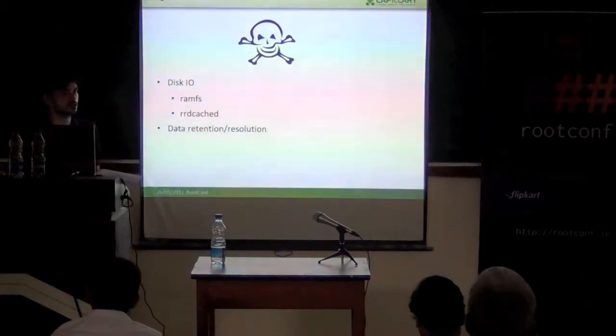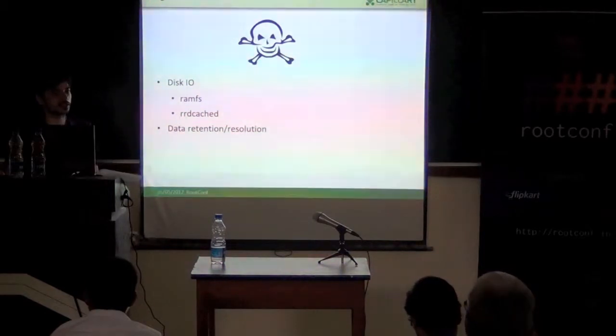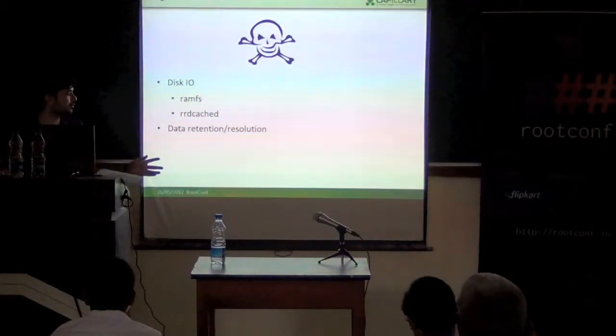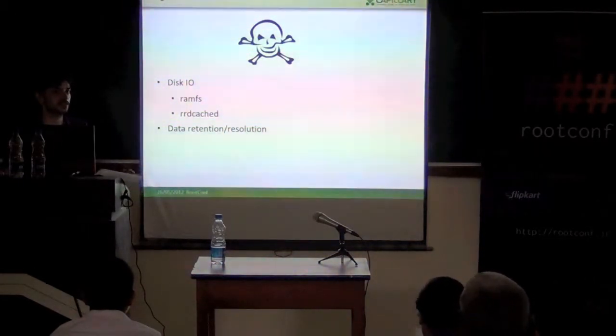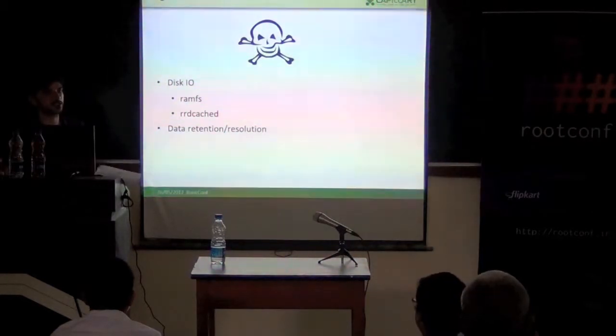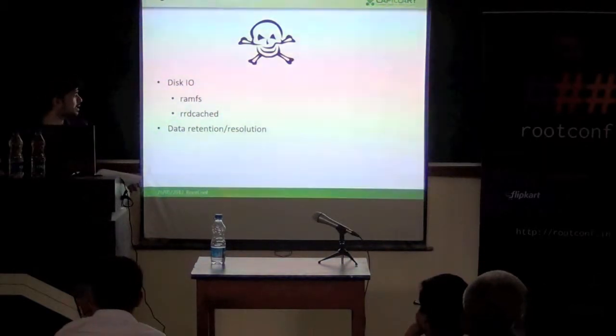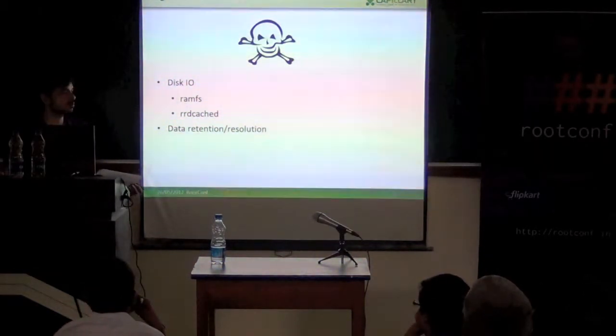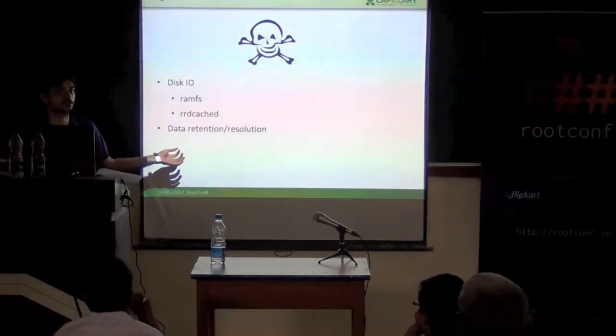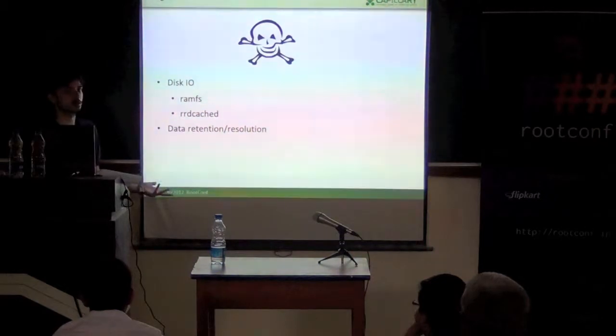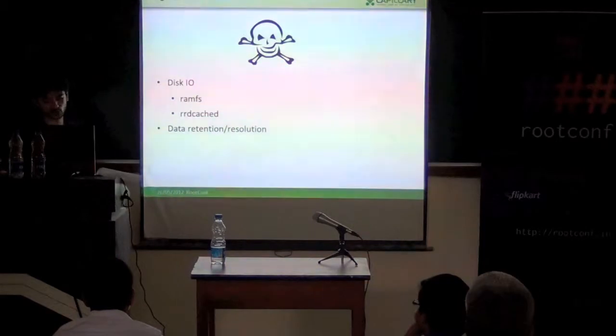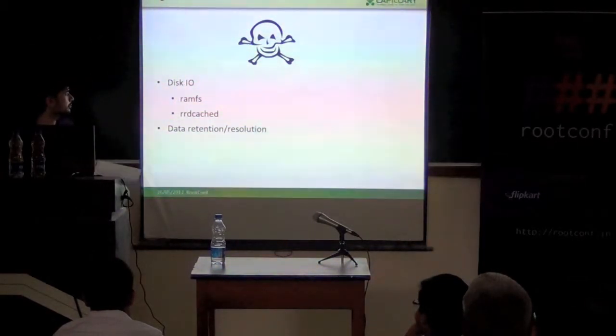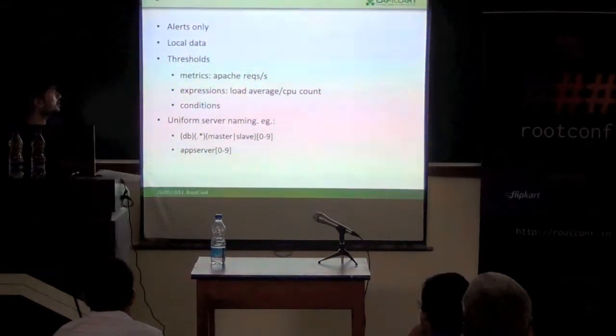Data retention is resolution-based. Ganglia does not retain all the data that it has. By default, more than a year back it will lose all data. For the current hour it will keep all data. For the past day it will keep averages for each hour. Similarly for past week it will keep averages for each day. The resolution of data kind of changes. This is a configurable property - if we want we can configure the RRD tool to store all the data, but that might be memory intensive.